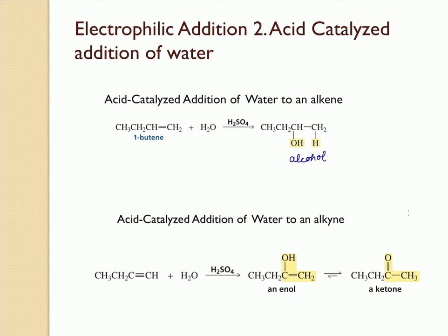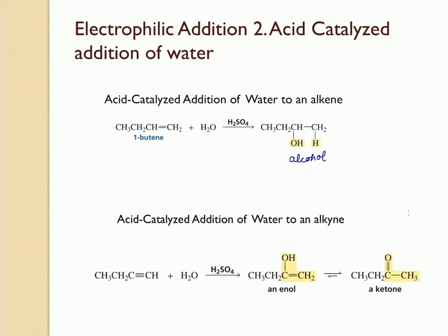This enol compound is really unstable, and therefore it will convert to the more stable ketone form. This interconversion between the enol form and the keto form is called keto-enol tautomerism.